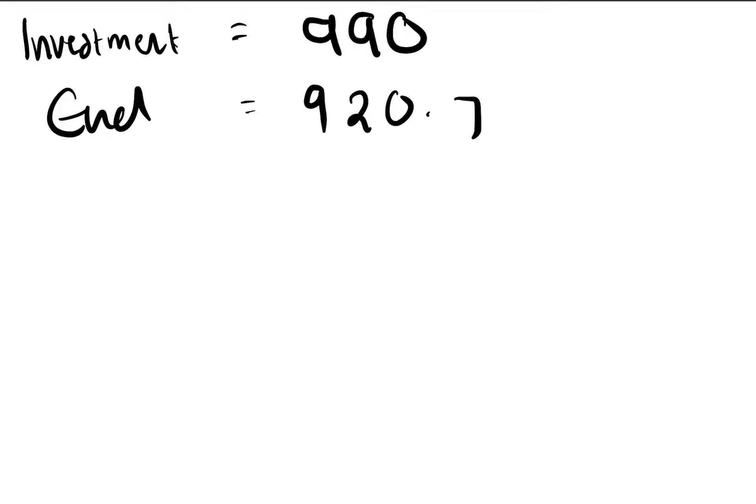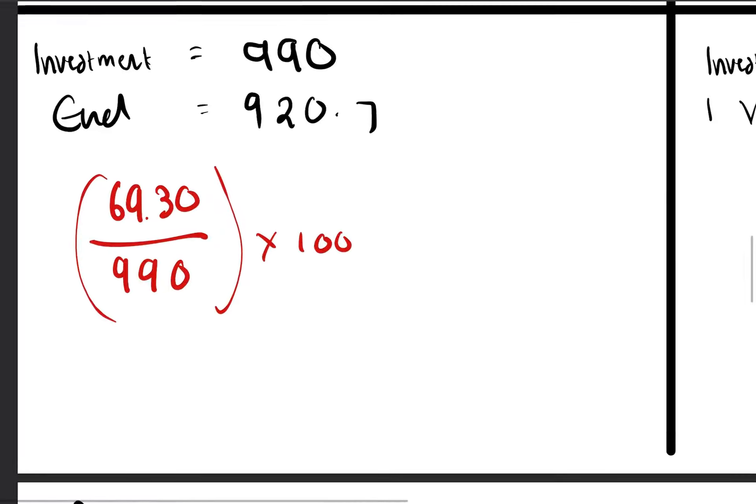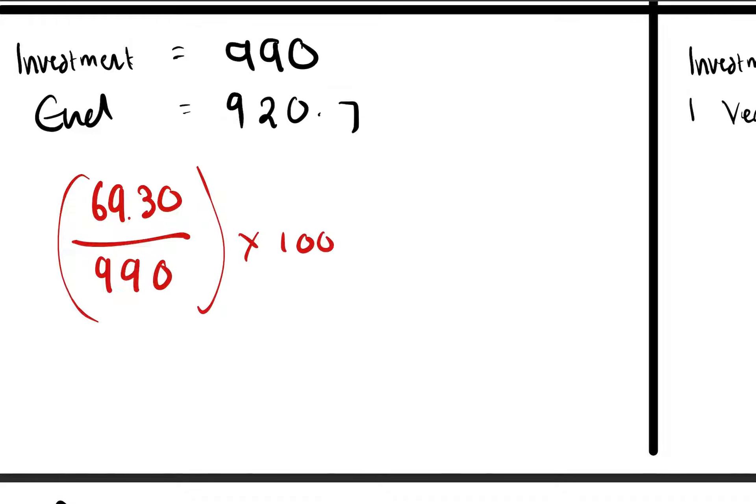...so what's our loss? Well, £990 minus £920.70, we have lost £69.30 over our original £990. Divide that, times by 100, and that's going to give us our loss. So 69.30 divided by 990 is 0.07, times 100 equals a loss of 7%.